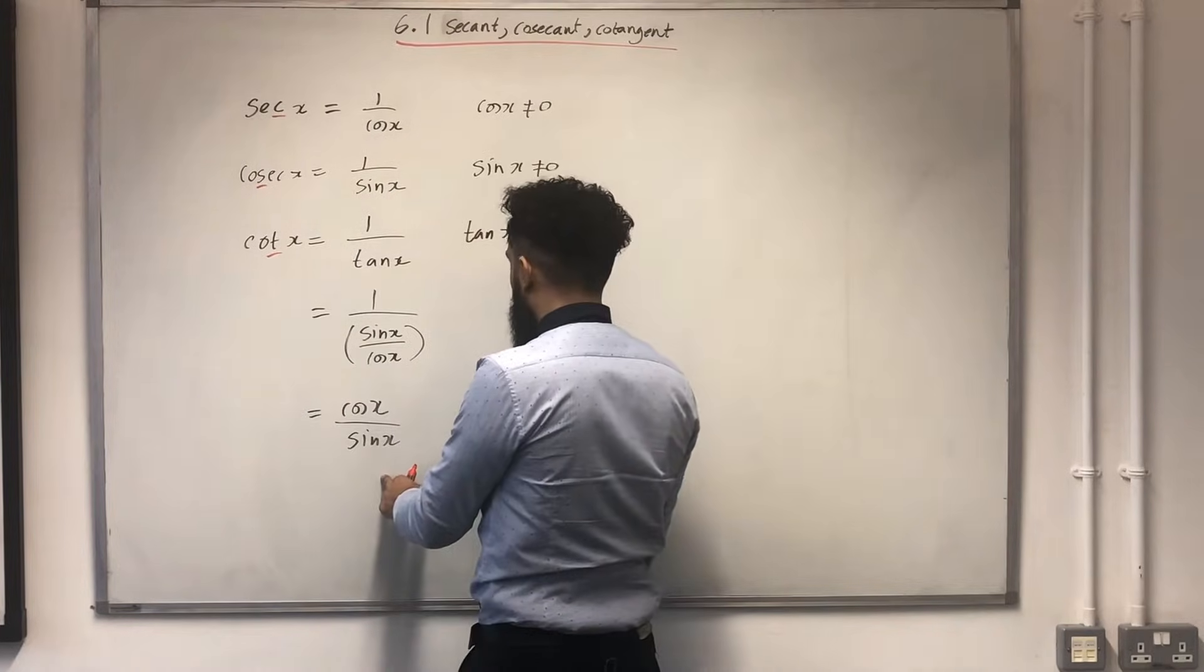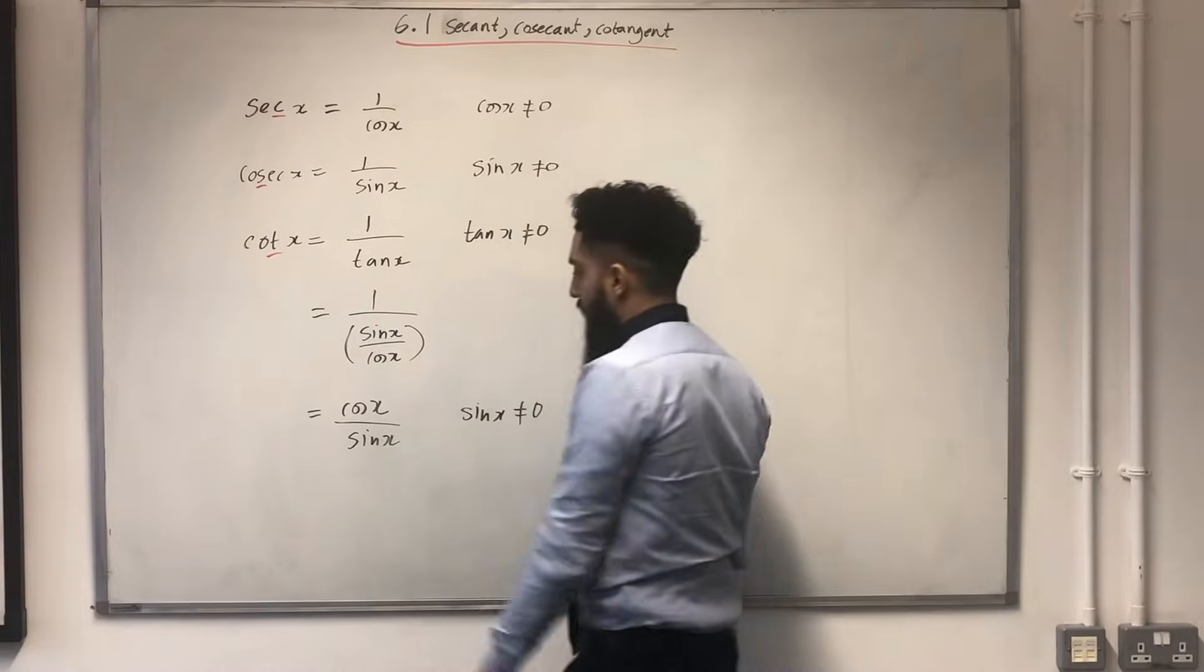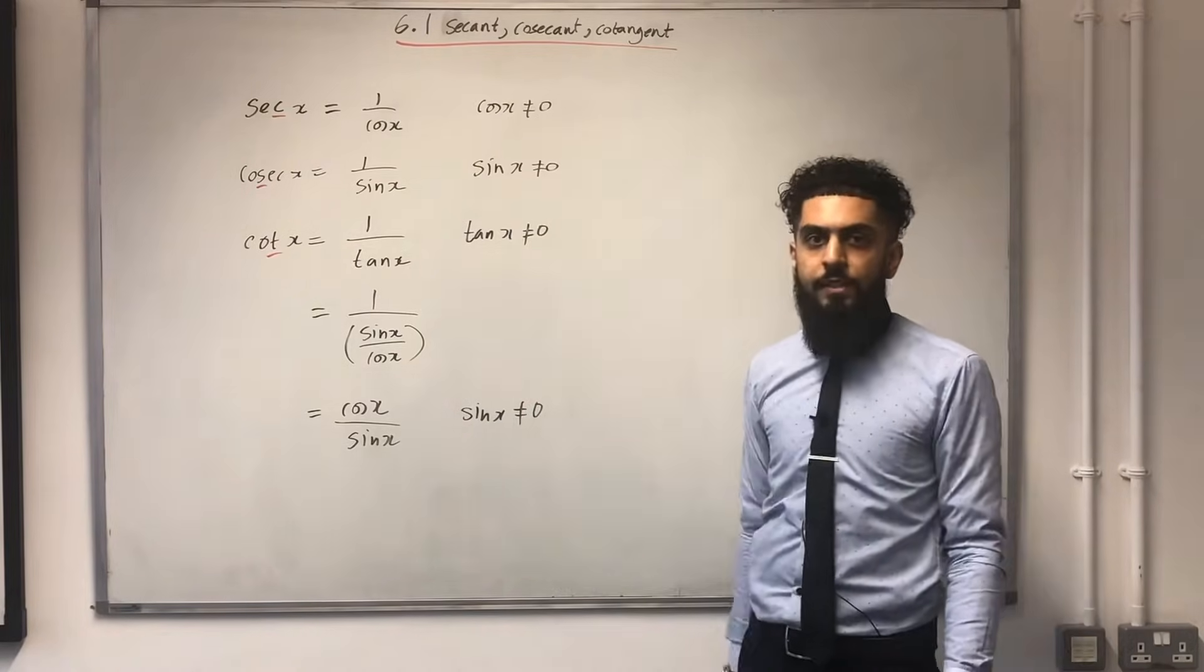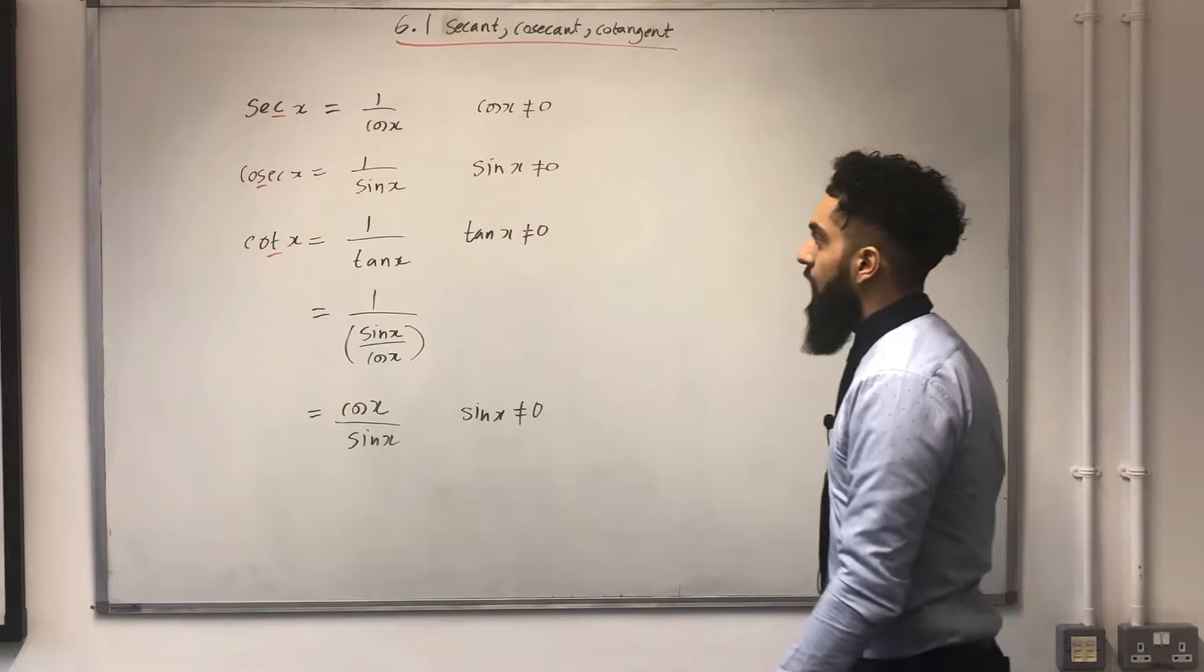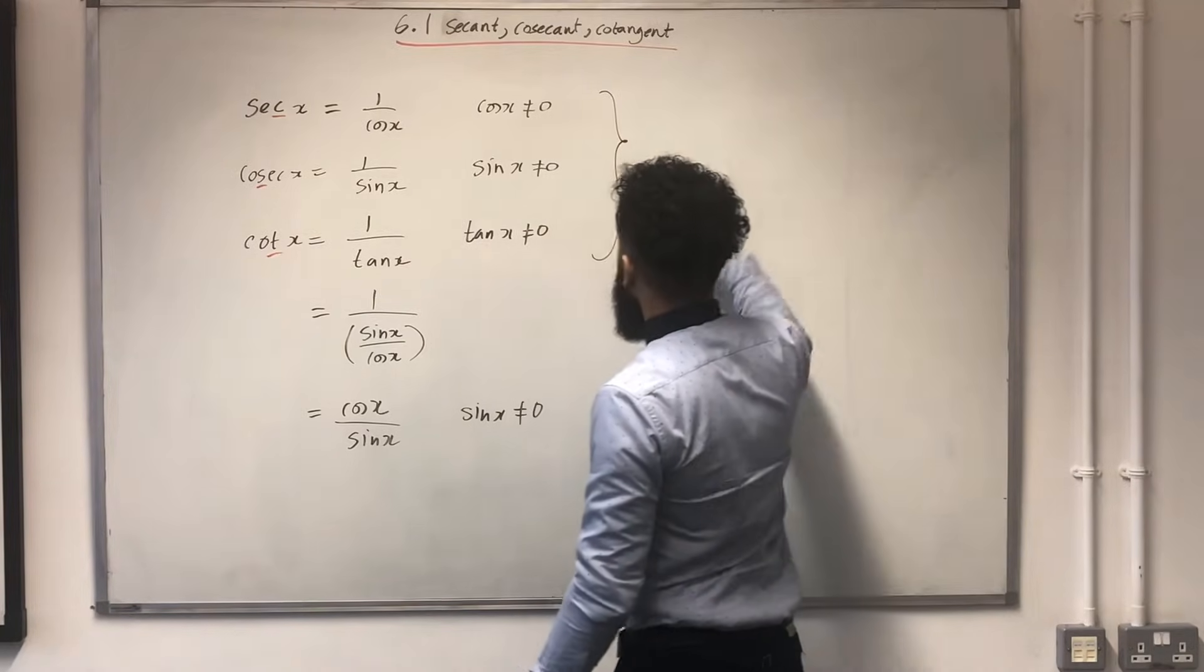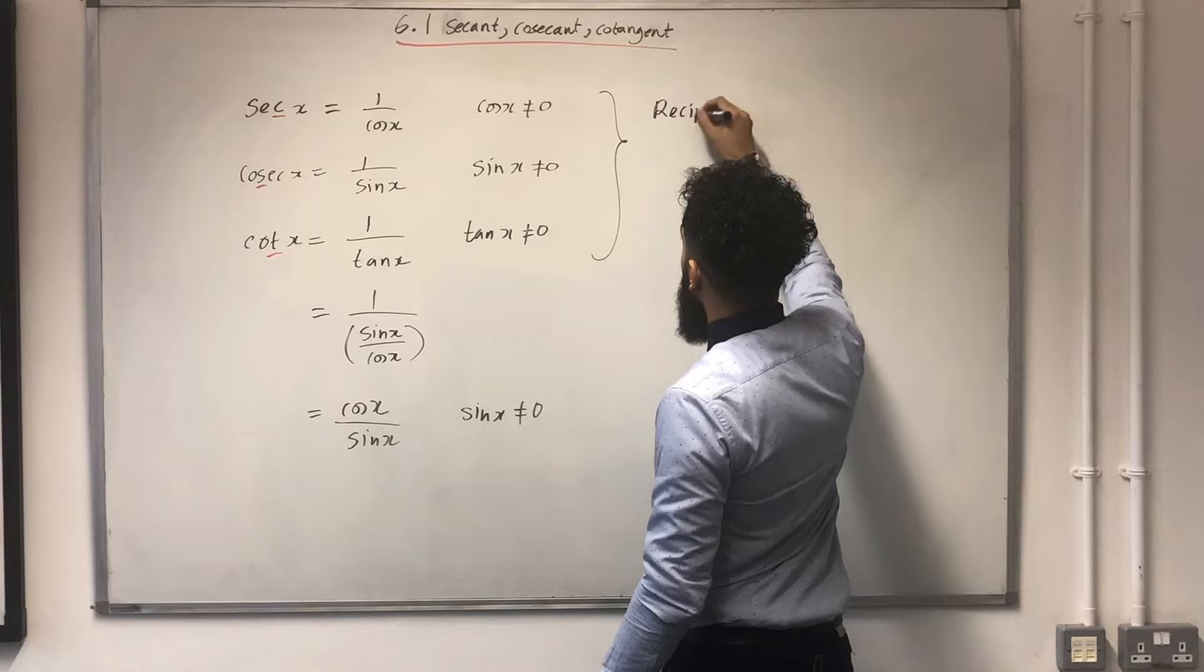Where sin x is not equal to 0, because then you'll have cos x divided by 0, math error. These are called reciprocal trigonometric functions.